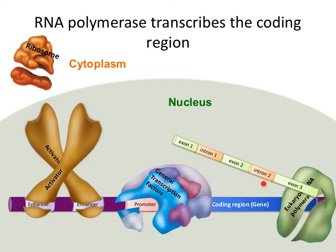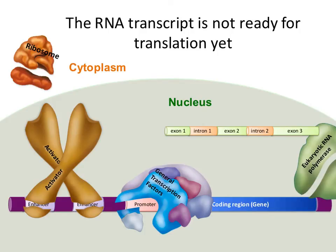Notice that this RNA transcript has exons and introns. The exons will be expressed — think 'exo-express' — while the introns are not expressed; think of them as keeping the information in. Here in eukaryotes, the finalized RNA transcript is not ready for translation yet. We still need to go through the process of splicing — removing the introns — and we need to do further modifications to the ends of the transcript.